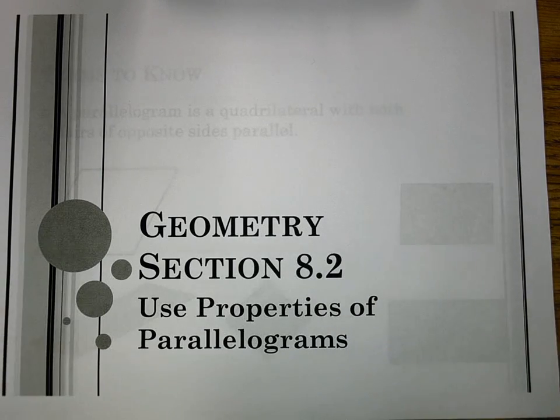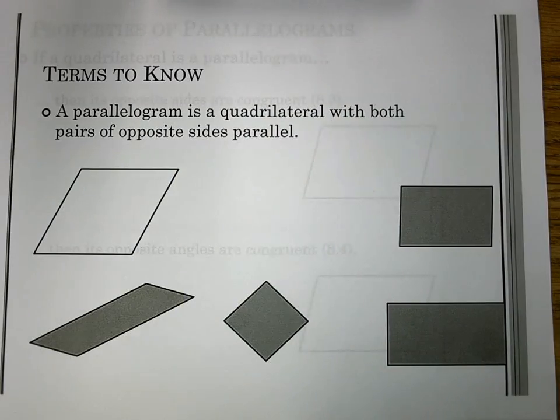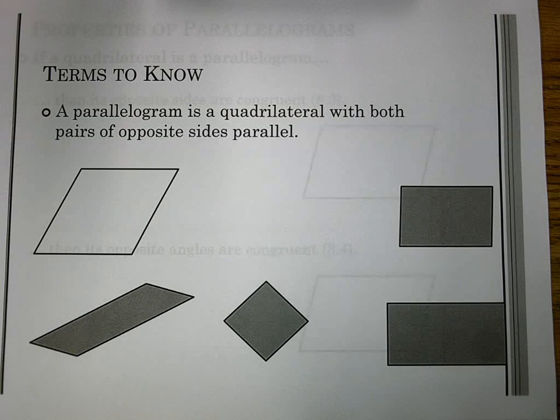Section 8.2 is our introduction to quadrilaterals, and this is where we look at our properties of parallelograms. Before we go further in our properties, we have to define a parallelogram. A parallelogram is a quadrilateral with both pairs of opposite sides being parallel.